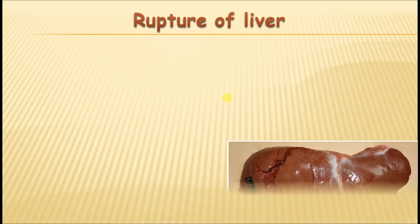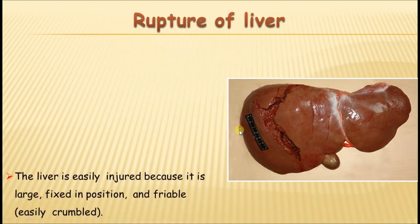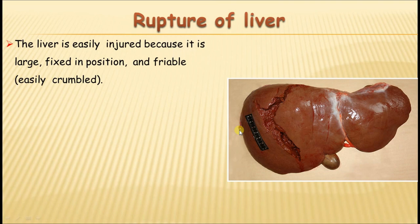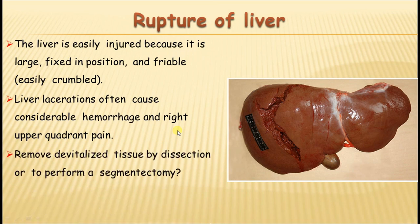Liver rupture may occur due to stab wounds, direct blow, or trauma, resulting in profuse hemorrhage because the portal veins, when ruptured, cannot retract and bleed extensively. The devitalized tissue must be removed by segmentectomy.